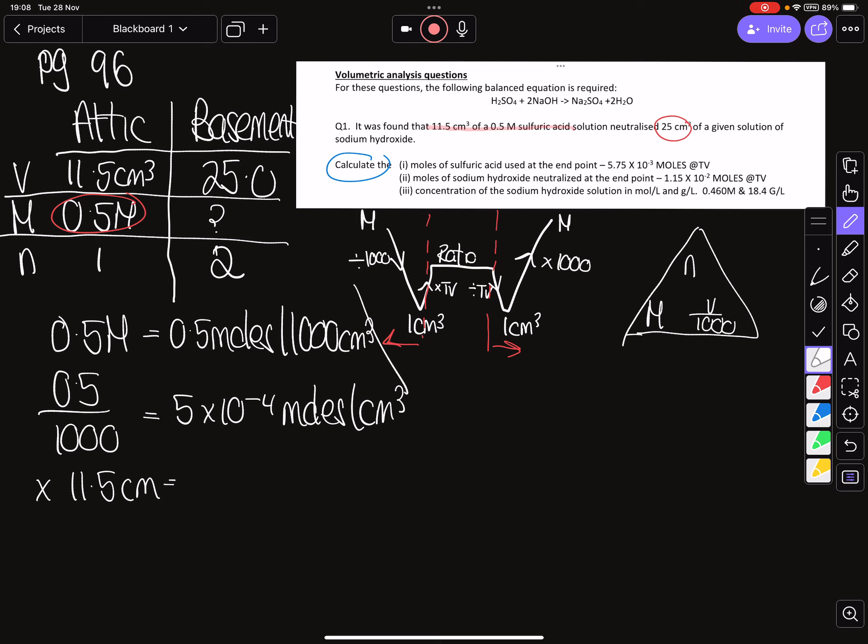So 5×10⁻⁴ by 11.5 is going to give us 5.75 by 10 to the minus 3 moles, and this is going to be in the 11.5 centimeters cubed. So I always just put TV to remind myself this is my titration volume. Now I'm going to use my ratio.